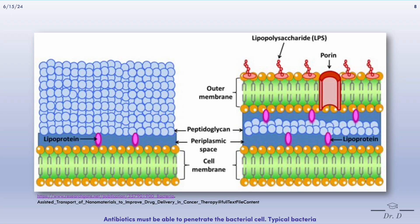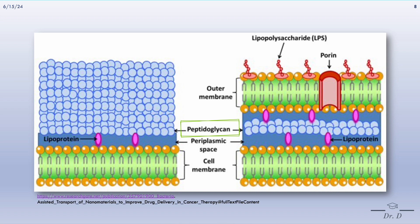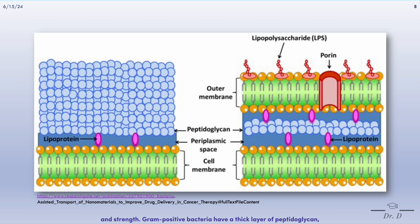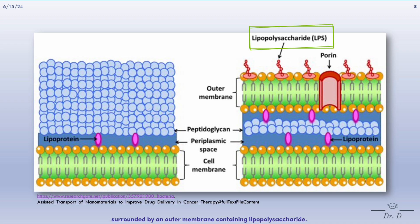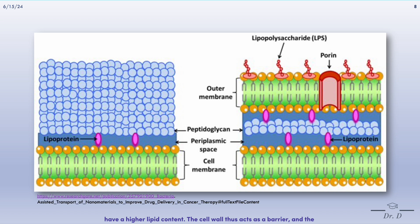Antibiotics must be able to penetrate the bacterial cell. Typical bacteria have a cell wall made up of peptidoglycans. This peptidoglycan structure confers resistance to osmotic pressure and retains cell morphology and strength. Gram-positive bacteria have a thick layer of peptidoglycan, and gram-negative bacteria have a thinner layer, but they are surrounded by an outer membrane containing lipopolysaccharide — which is why gram-negative bacteria have a higher lipid content. The cell wall acts as a barrier, and its permeability properties have a major impact on the susceptibility of bacteria to antibiotics.